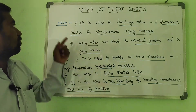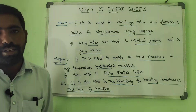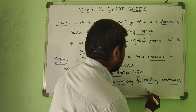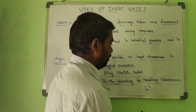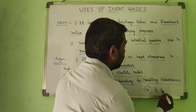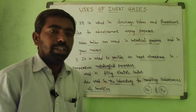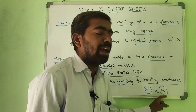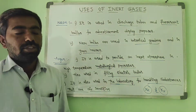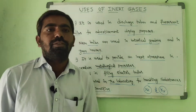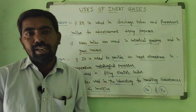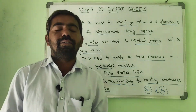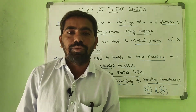The next two elements are xenon and krypton. There are no significant uses for xenon and krypton. This concludes the concept of uses of inert gases. In the next class, we will discuss another topic. Thank you.